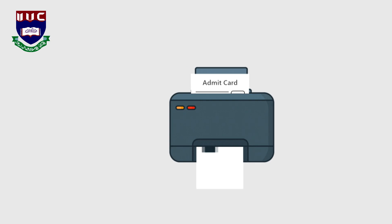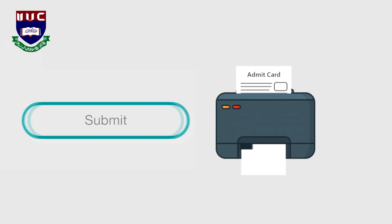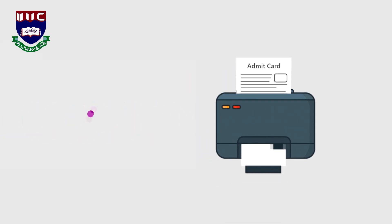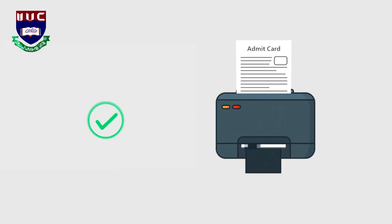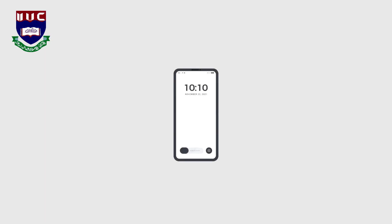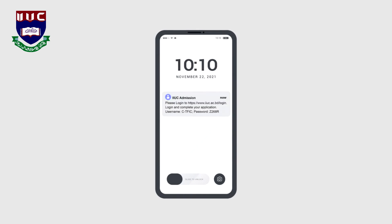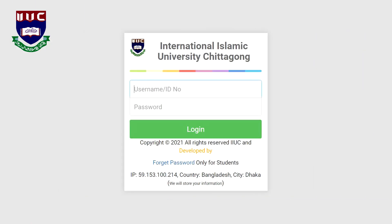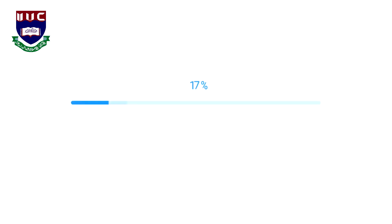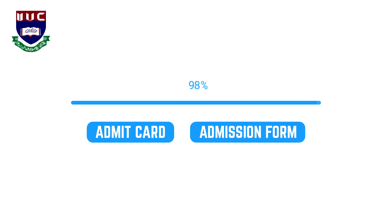To print an admit card, after successful submission of all your data including payment information, you will receive an SMS with your login password. You must use that password to log in and download your admit card and admission form.